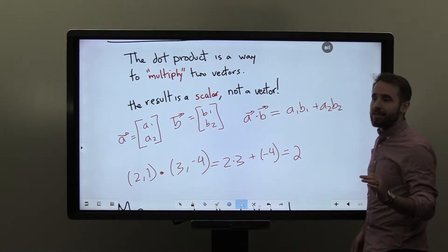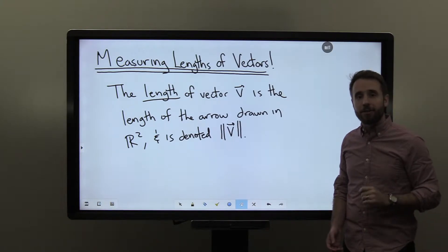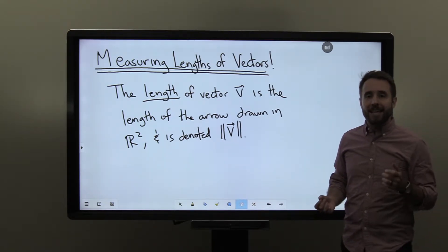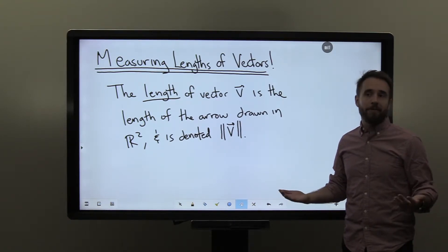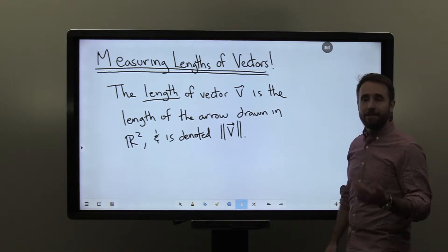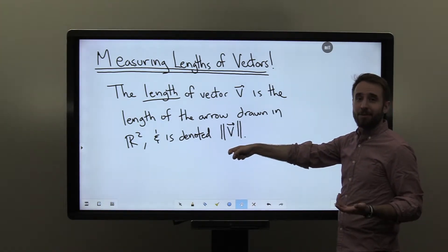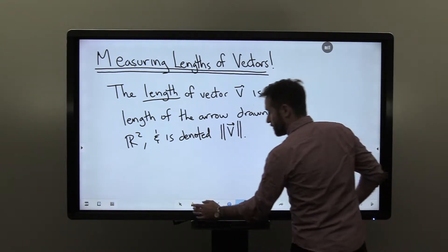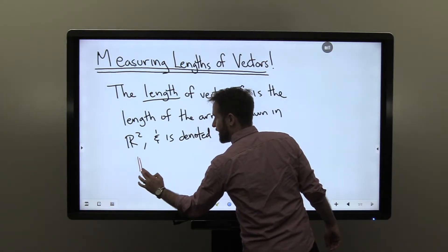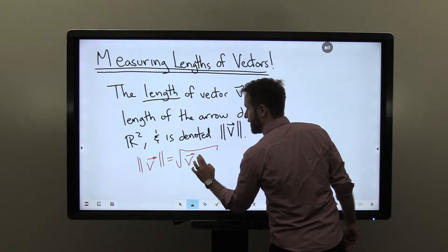Let's see one way that we can use this geometrically. It turns out that we can use the dot product to measure lengths of vectors. The length of a given vector v is simply the length of the arrow we would get from the vector if we drew it in arrow form in two-dimensional space. We denote the length of a vector using double bars — these double absolute value signs — and this can be read as the length of v. The length of the vector v is simply going to be the square root of v dotted with itself.